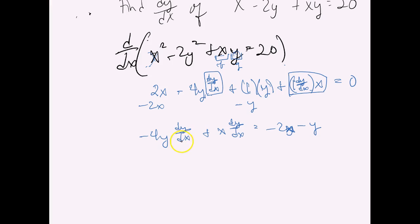And what I would do now is just advise you to factor, because both terms have this dy/dx which is what we're supposed to be isolating. So you're just going to factor that out to the front, and when you take that out it's going to leave a negative 4y plus x on this side.